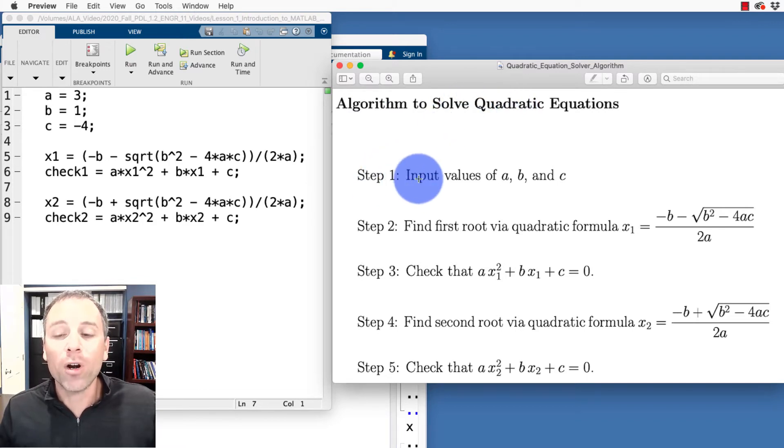The first part of this algorithm is going to be to store the different values of a, b, and c in the standard form of our quadratic equation. We see that in lines one through three of our code that accomplishes step one.